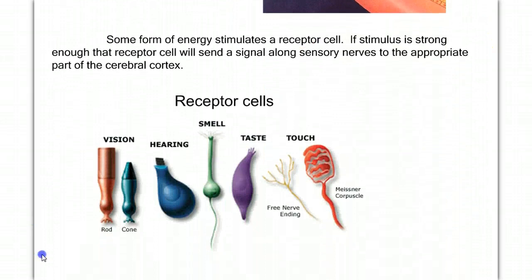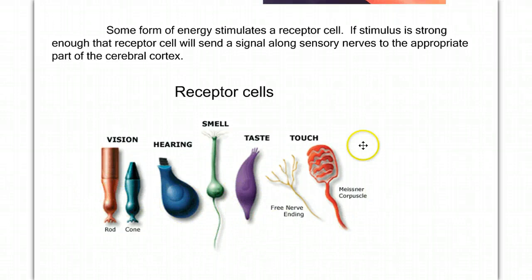So some energy must stimulate receptor cells, and we have lots of different receptor cells for vision, hearing, smell, taste, and touch. And those receptor cells have to be triggered, initiating action potentials, and those action potentials rush to the brain and are then put together to form our reality or our perception.